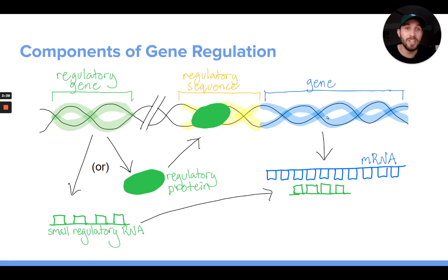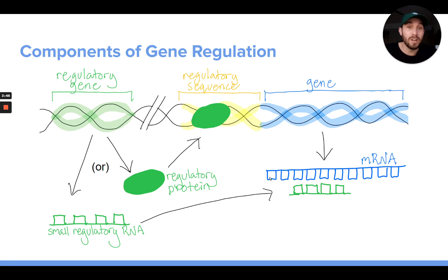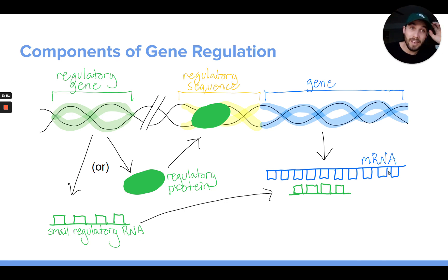A gene has the instructions to build something. Through transcription, we make that into mRNA, and then we send that mRNA to a ribosome to actually create the protein that it codes for.